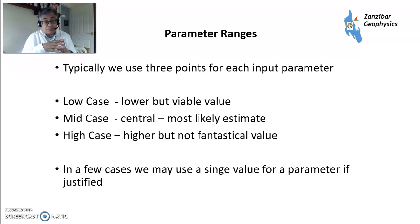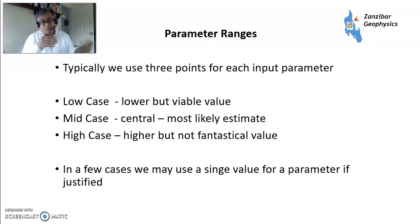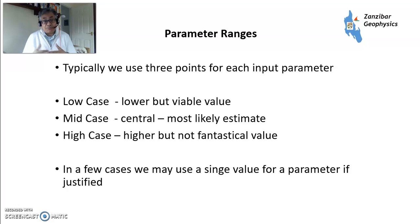For parameter ranges you need to input, typically you put in three cases. A low case should be lower but viable — for example, if your porosity cutoff is 10%, don't put in 5% porosity because that clearly isn't going to happen. Mid-case is your most likely estimate; if someone asks you for a single answer, this is what you give them. A high case should be higher, but not fantastical — you're not going to get 35% porosities at 5 km burial. Have a reasonably wide range, but keep it sensible.